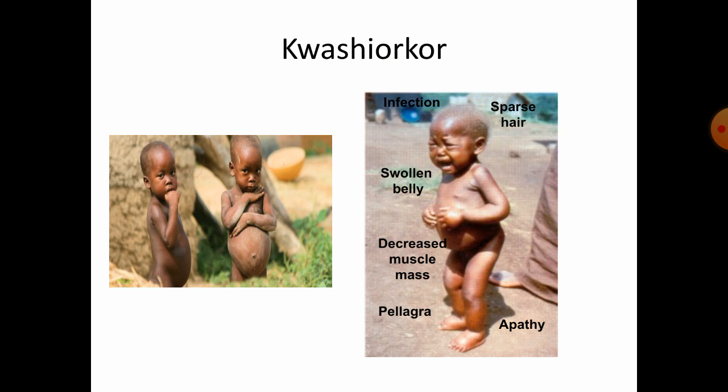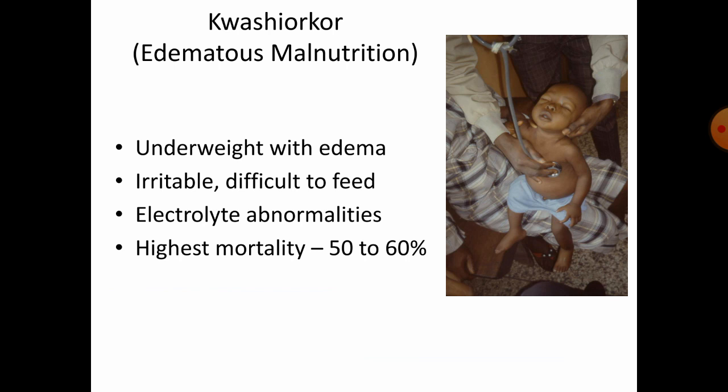The main signs seen in Kwashiorkor are infections, thin and brittle hair, swollen belly due to edema, decreased muscle mass, pellagra (niacin deficiency), and apathy. Kwashiorkor is otherwise called edematous malnutrition because it causes edema. Children with Kwashiorkor are underweight with edema, irritable, and difficult to feed. There are also electrolyte abnormalities — blood plasma electrolytes like sodium, potassium, and chlorine are at abnormal levels.